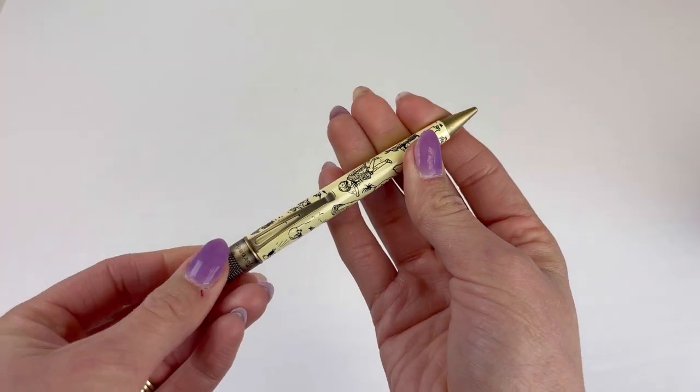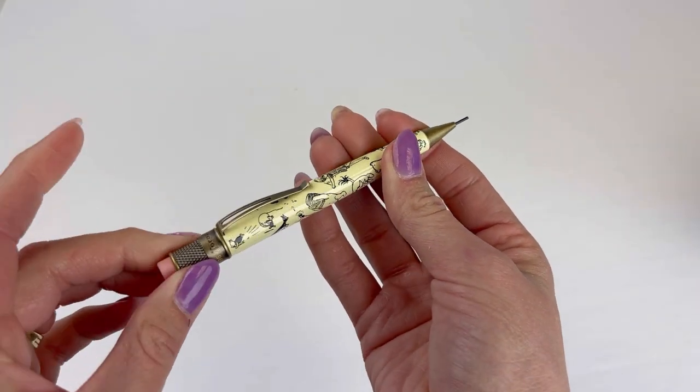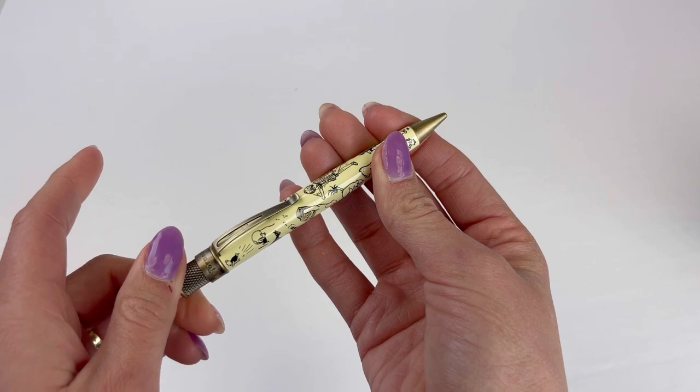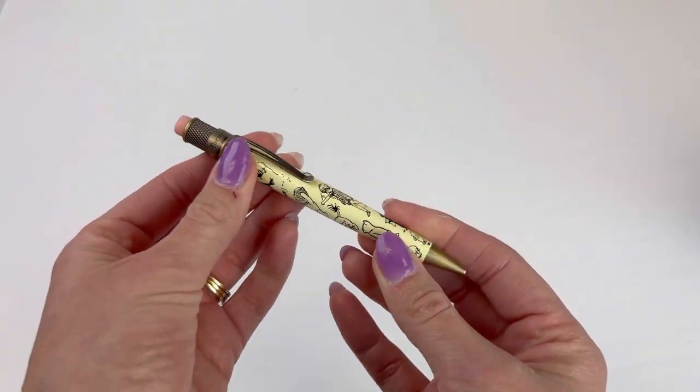Instead of a top disc, that's where your eraser is going to be and it is replaceable as you saw with the extras that were provided. And to extend the lead you just twist the back end of the pen.